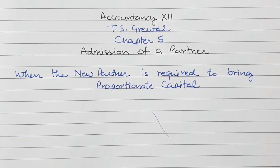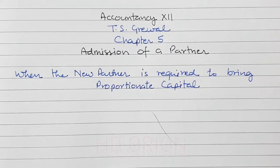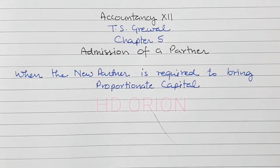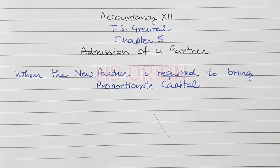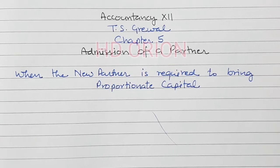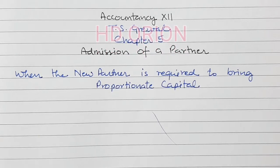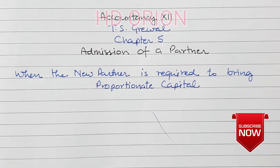Hello everyone. Welcome to my channel HD Orion. We are studying accountancy for partnership firms for Class 12th and the book is TS Grewal's. Presently we are discussing Chapter 5: Admission of a Partner. Now we will discuss when the partner is required to bring proportionate capital. So let us see some of the numericals from the textbook.